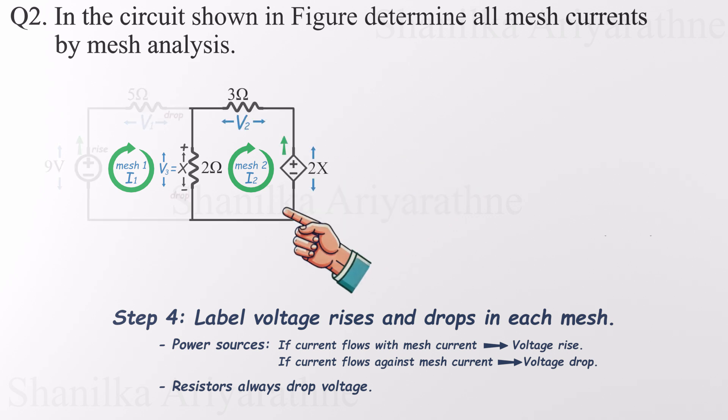When we look at mesh two, we notice something important. The current through the dependent voltage source flows opposite to the direction of the assigned mesh current. That means this source should be labeled as a voltage drop, not a rise. And as always, resistors are voltage drops too. This step is absolutely crucial. Mixing up a rise and a drop can throw off your entire KVL equation, leading you straight to the wrong answer. So slow down, check your current directions carefully, and make sure you've labeled everything correctly before moving forward.